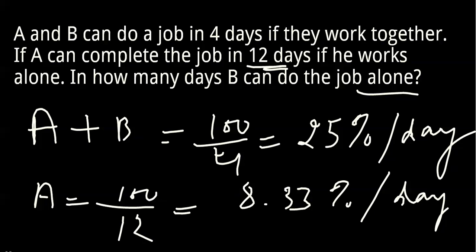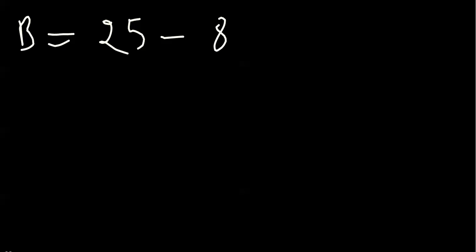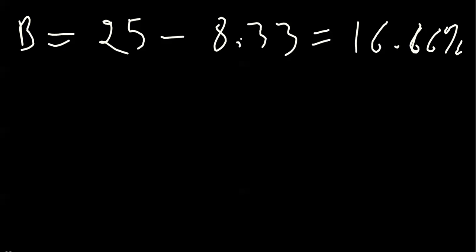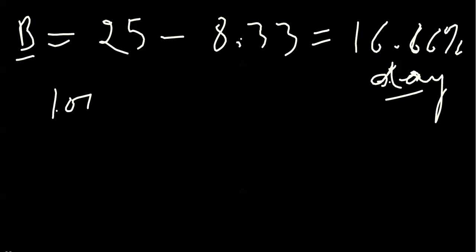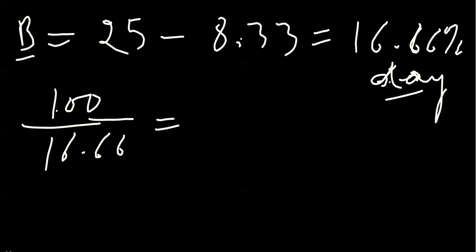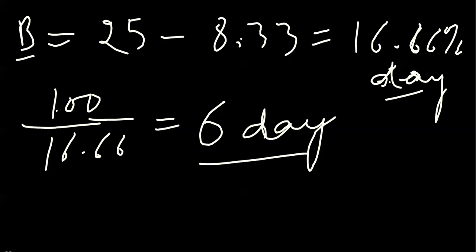To find B's efficiency, we subtract A's efficiency from the combined efficiency: 25% minus 8.33% equals 16.66% per day. The number of days B needs to complete the job is 100 divided by 16.66%, which comes out to 6 days. So B can complete the job in 6 days working alone.